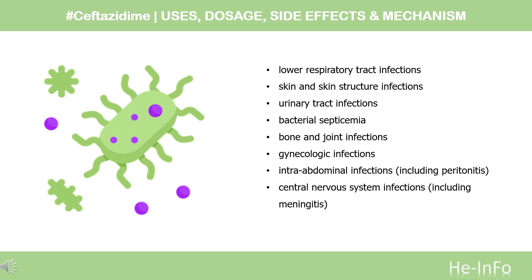What is ceftazidime used for? Ceftazidime is indicated for the treatment of lower respiratory tract infections, skin and skin structure infections, urinary tract infections, bacterial septicemia, bone and joint infections, gynecologic infections, intra-abdominal infections, and central nervous system infections including meningitis, caused by susceptible bacteria.